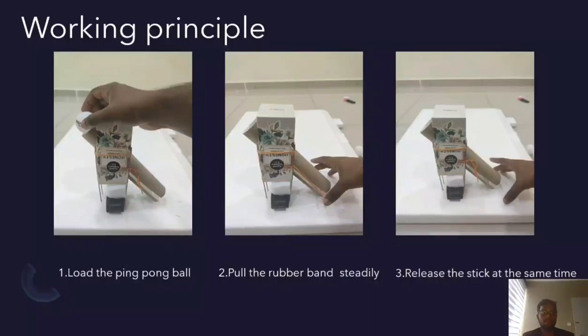So this is the working principle of the launcher. First of all, load the ping pong ball at top of it and then pull the rubber band steadily. In this project, we have pulled around 7.5 cm while the initial length of the rubber is 4.5 cm. And then release the stick at the same time at the right angle to have the correct launching.